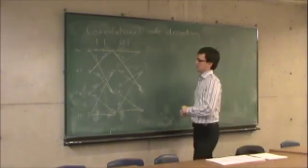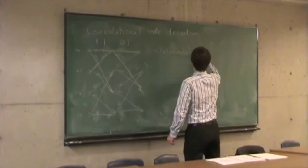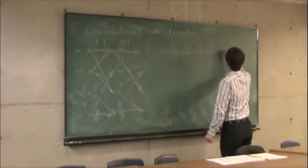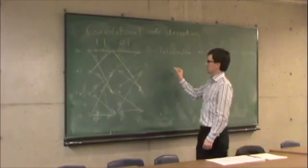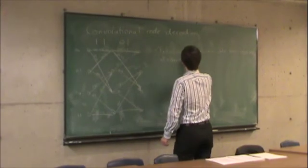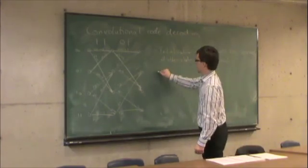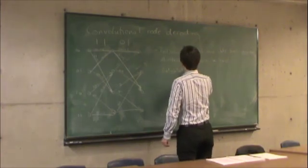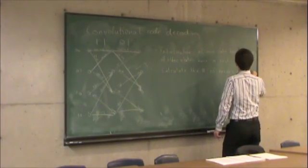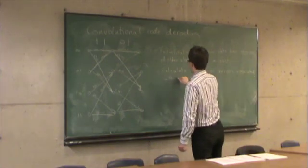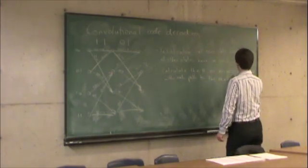The Viterbi algorithm works like this. Initialization: the all-zero state has zero cost. All other states have infinite cost. Then calculate the number of errors associated with each path to the next states — the next level.